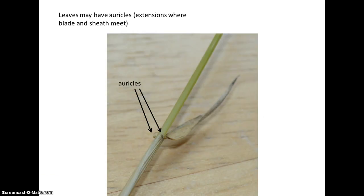Another optional feature is one of having auricles. Auricles are tiny extensions that come off the top of the sheath.